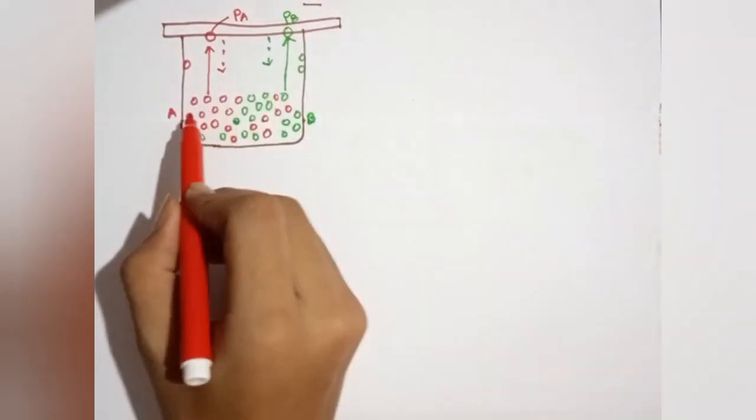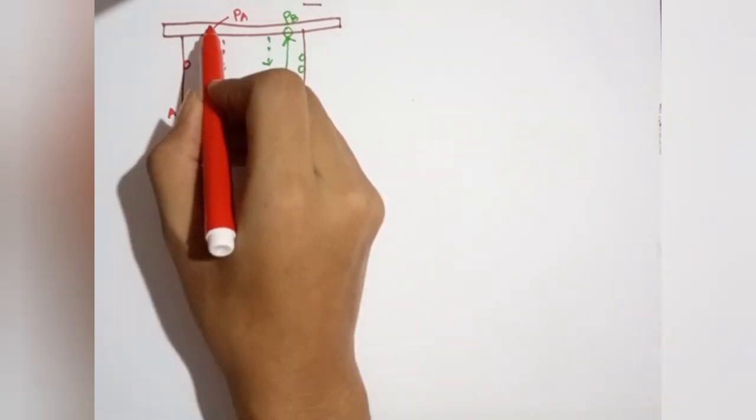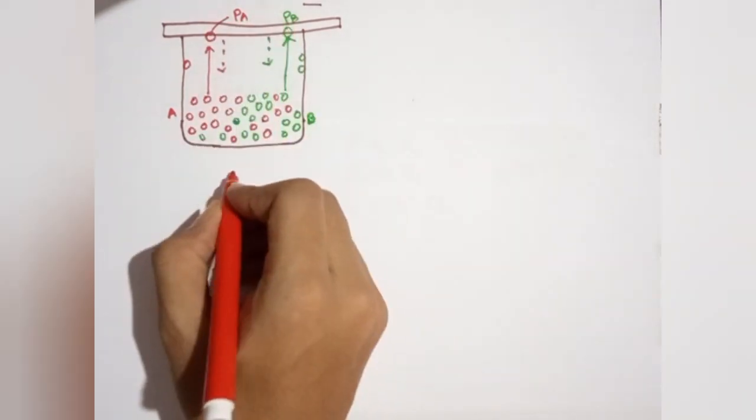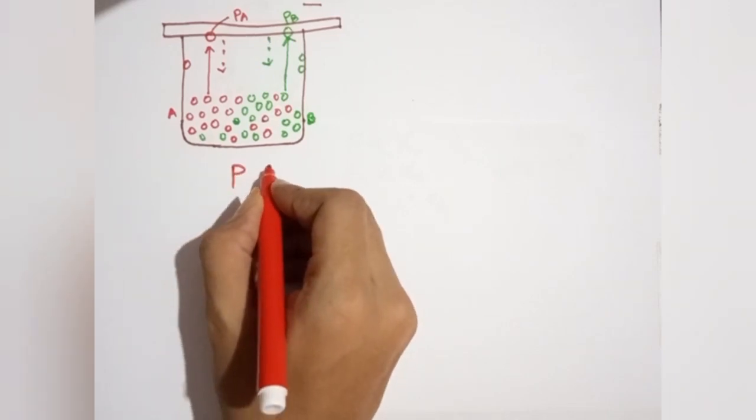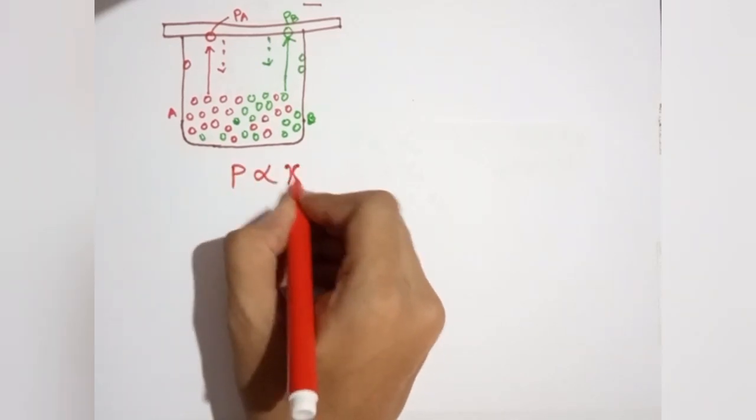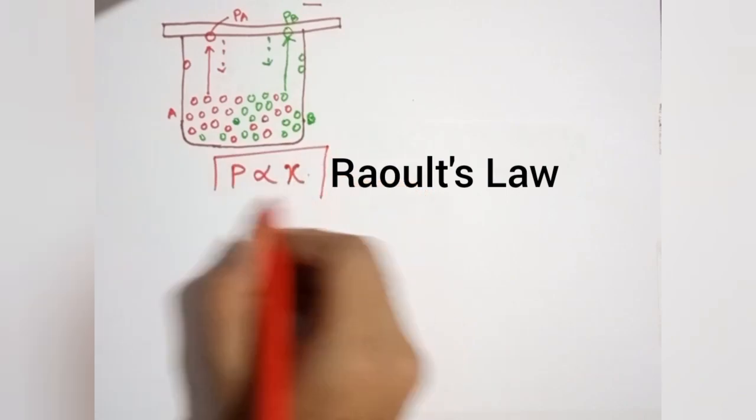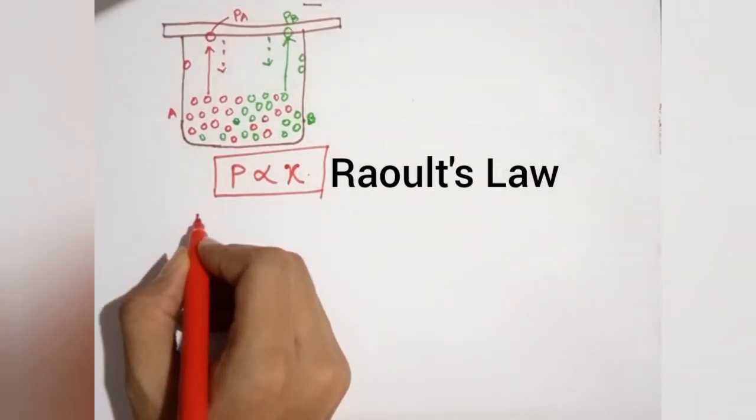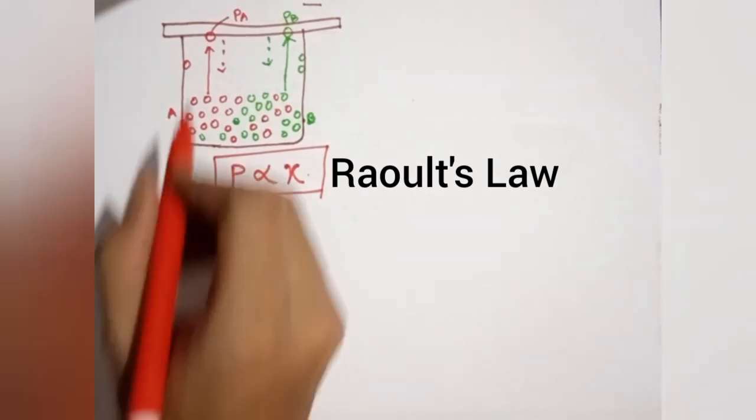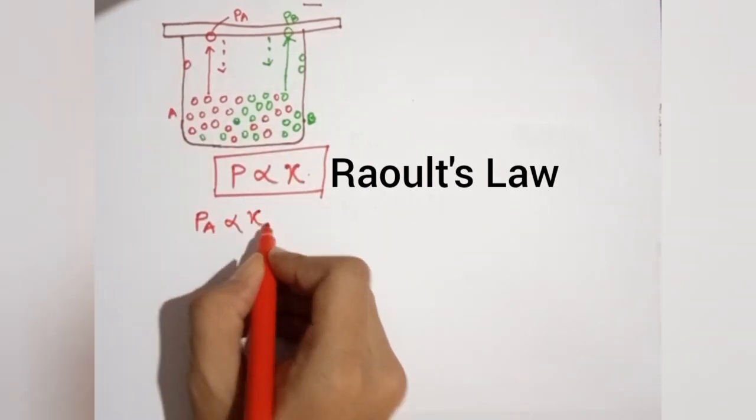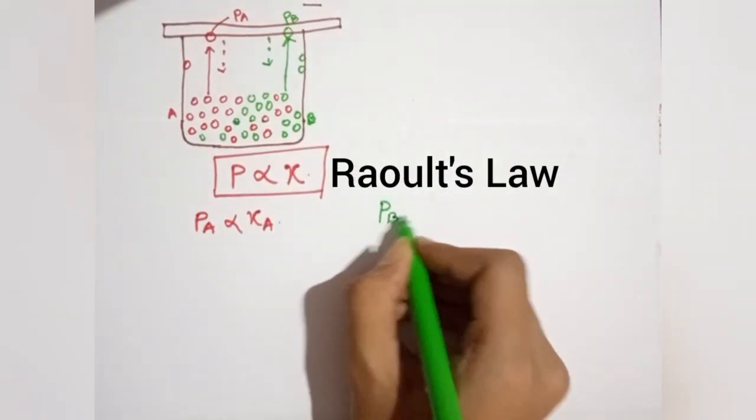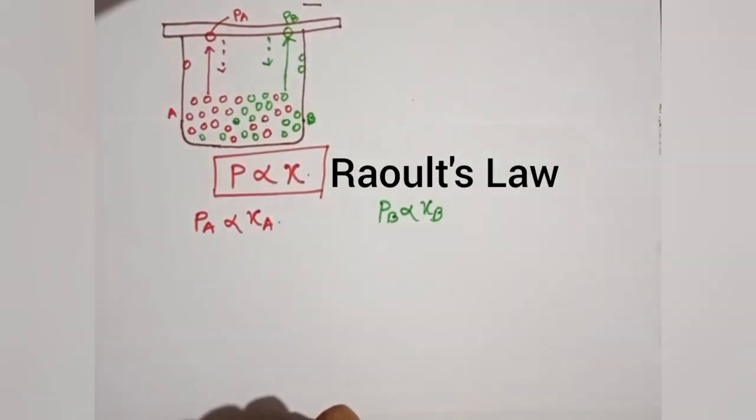We have seen there is a closed container with A and B liquids present, having pressures PA and PB exerted on the walls. What Raoult's law says is the vapor pressure of a component is directly proportional to its mole fraction. So PA is directly proportional to XA, and similarly, PB is directly proportional to XB according to Raoult's law.